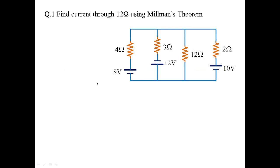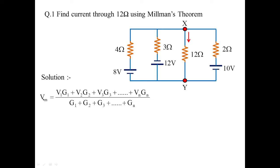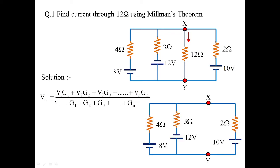Let us apply this theorem to obtain results for different problems. In this particular problem we need to find out the current through 12 ohms. We are going to apply Millman's theorem. I have taken the X terminal and Y terminal, where we need to find out the branch current flowing in 12 ohms. I am removing the 12 ohms from the given circuit, and then I am going to apply Millman's voltage formula and Millman's resistance formula.